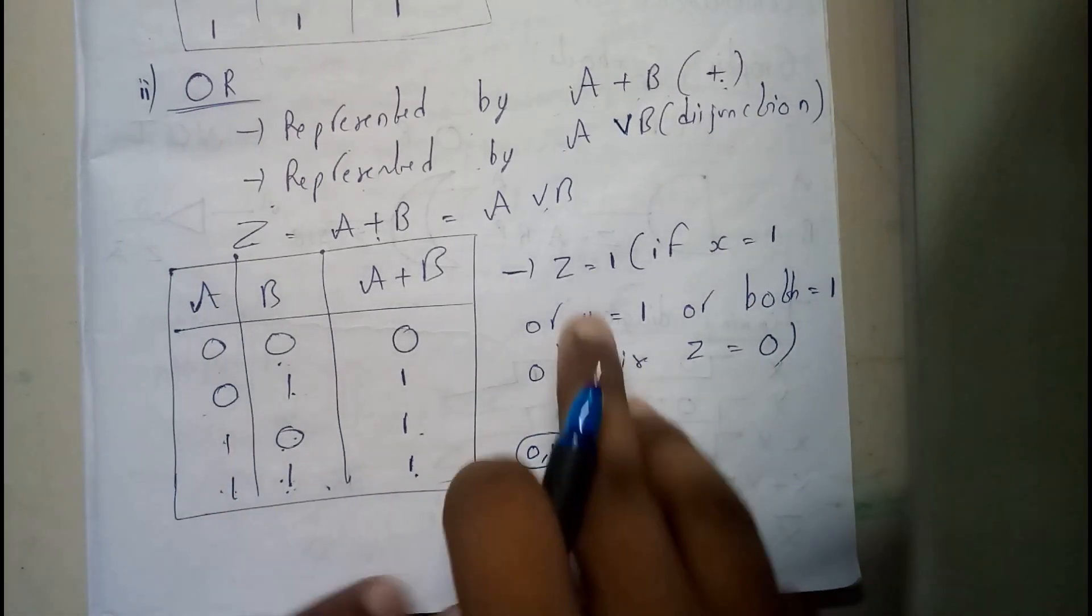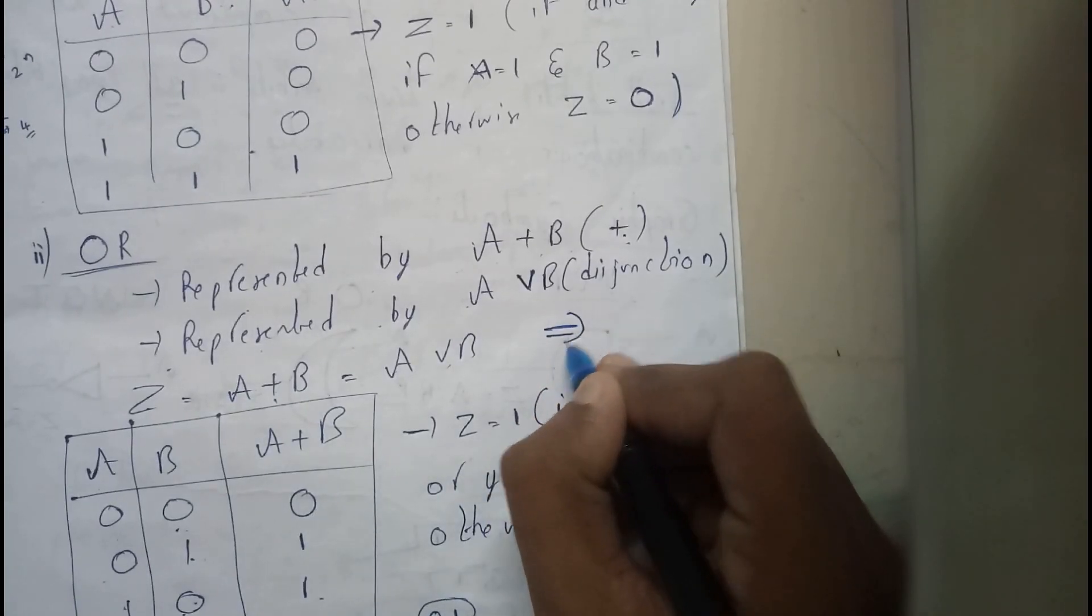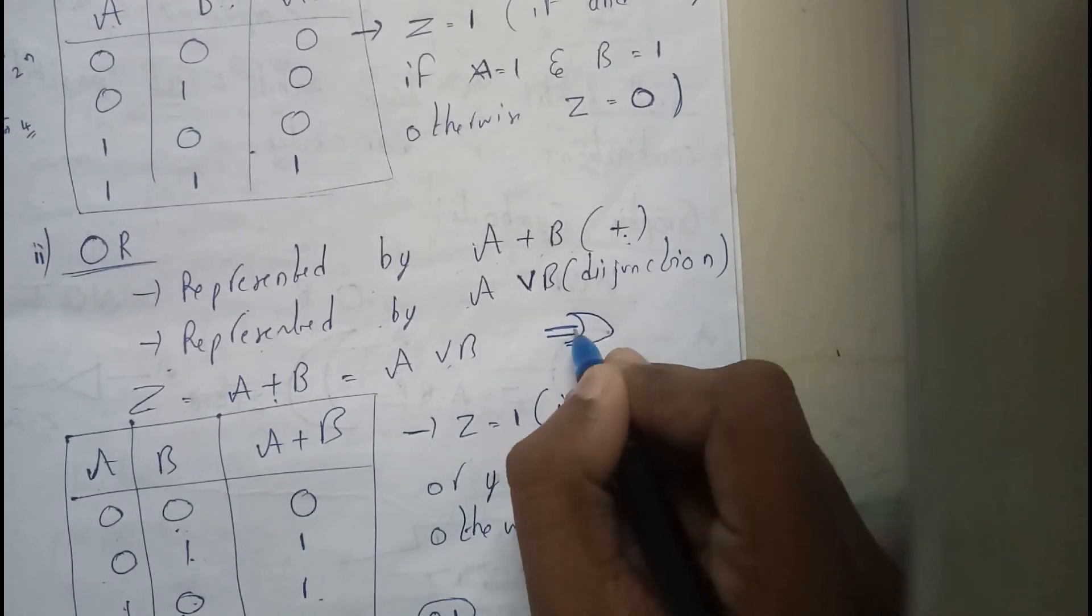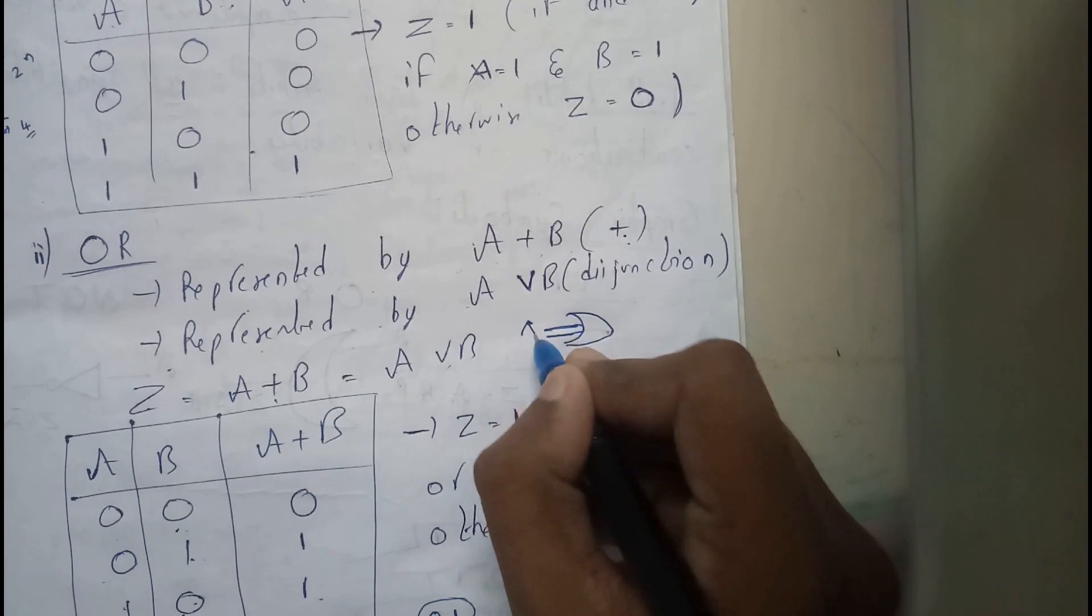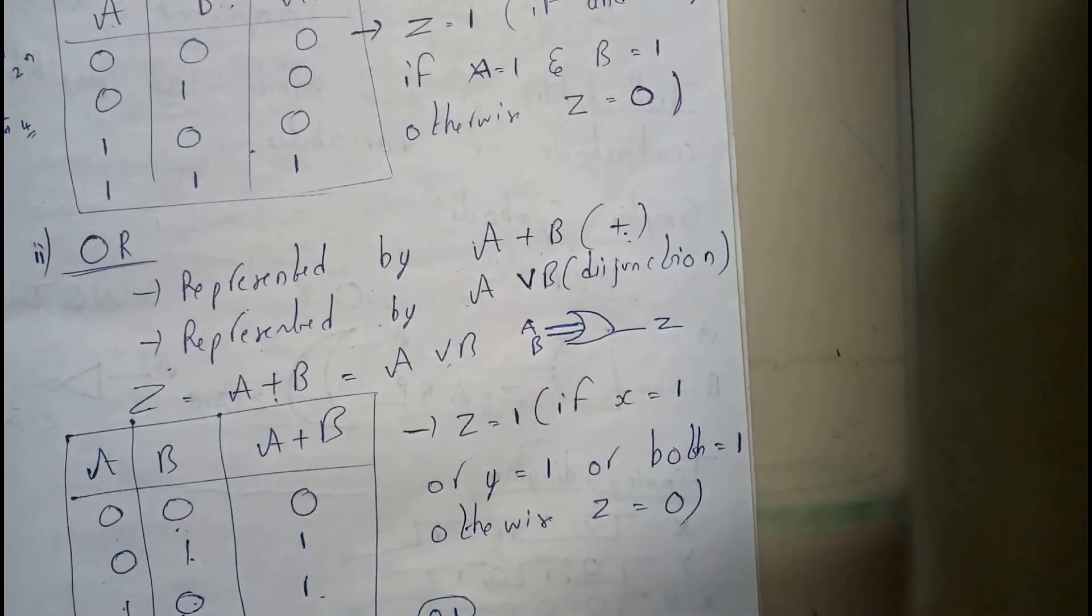Okay, so the symbol is like this: A, B, and the result is Z. This will be the symbol of OR gate.